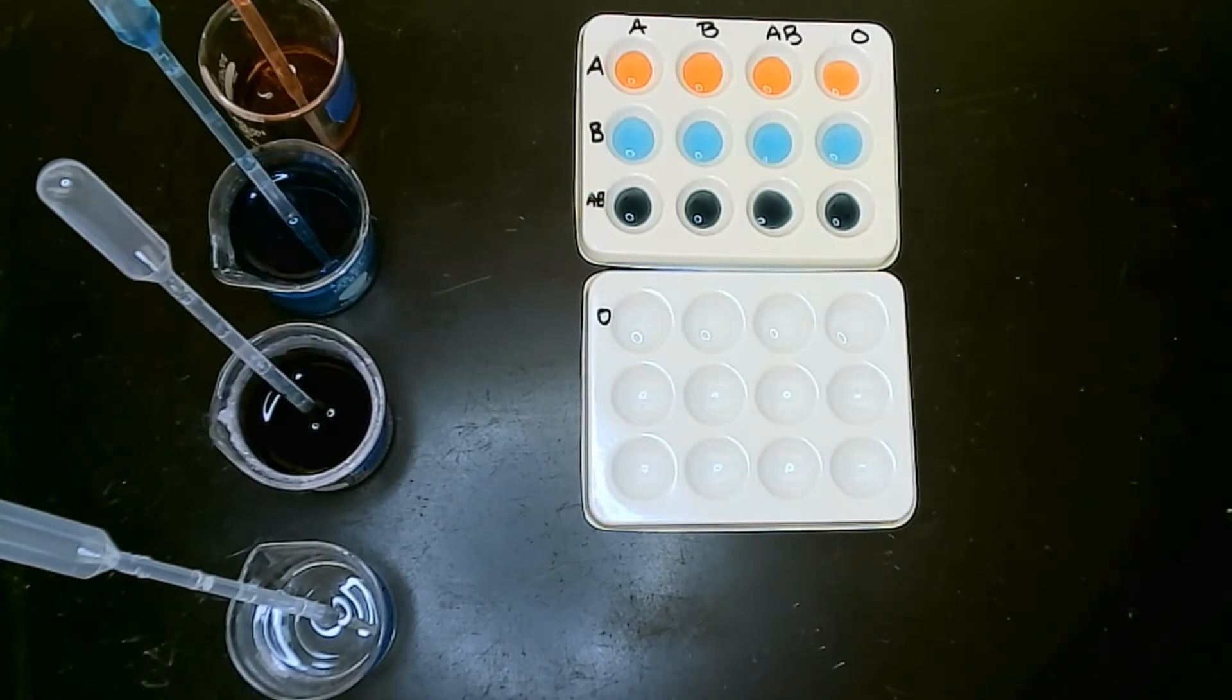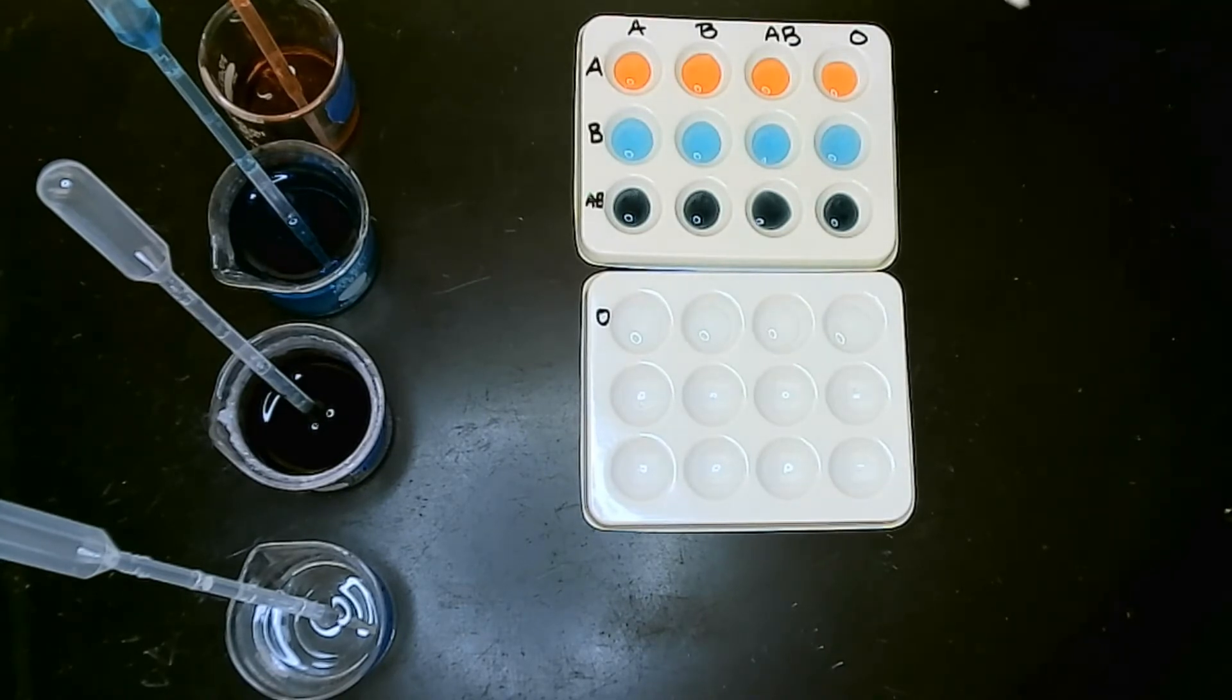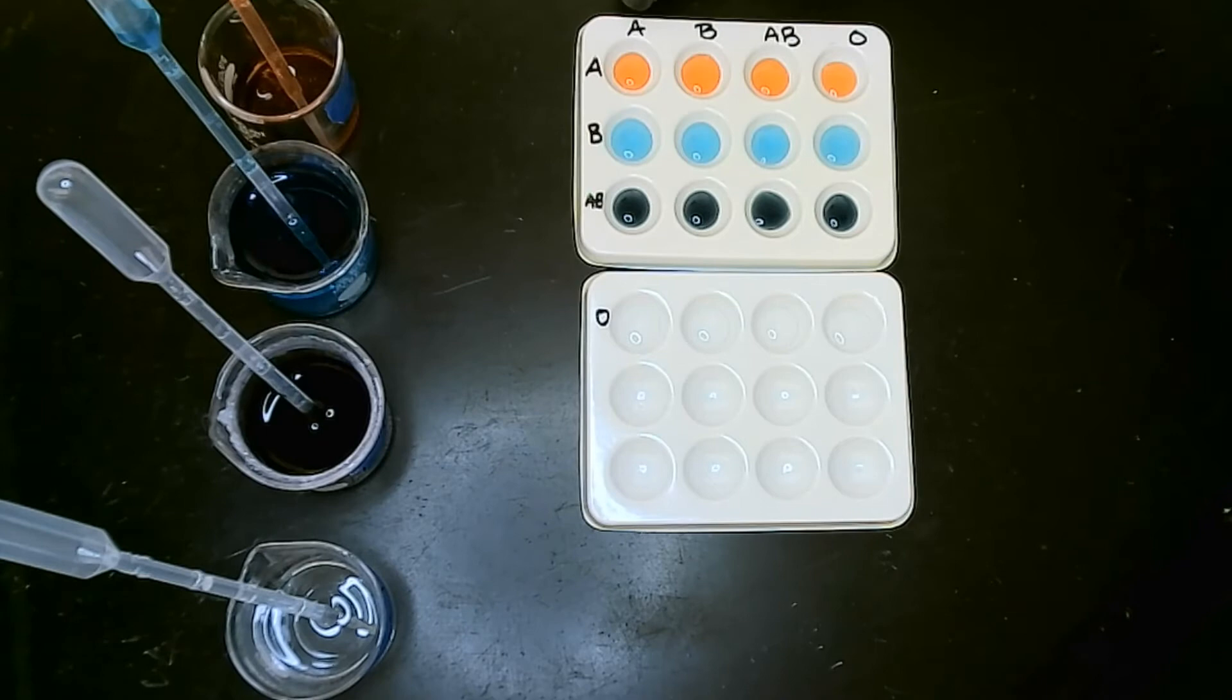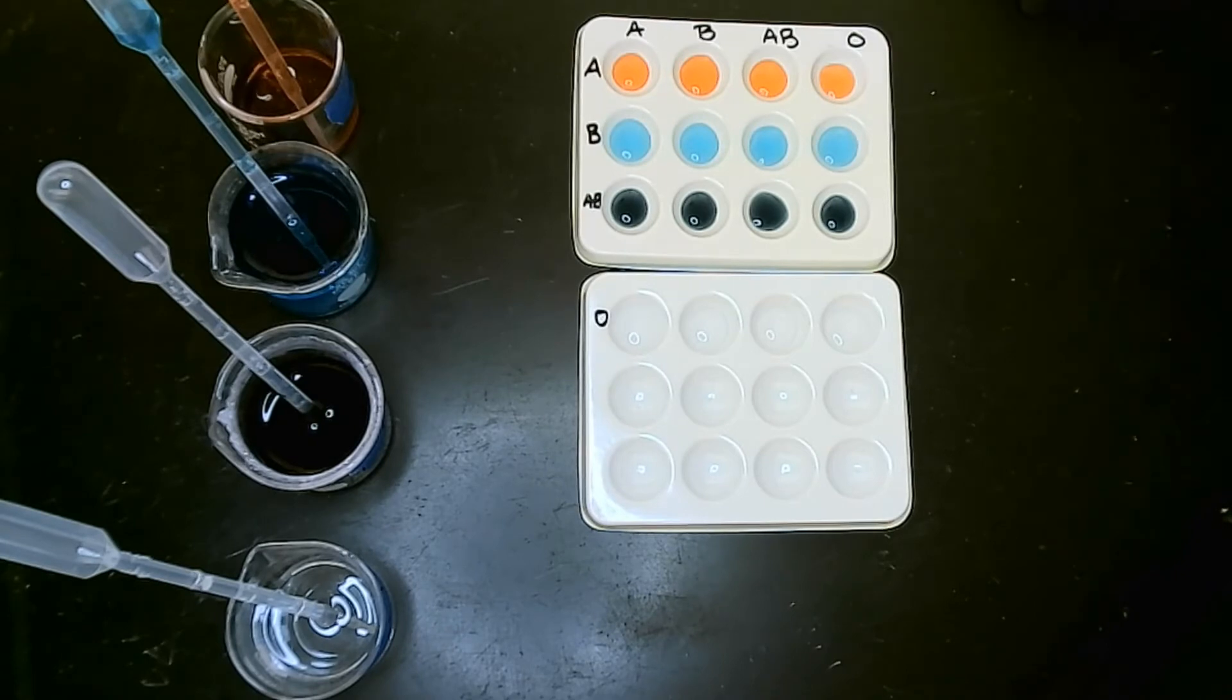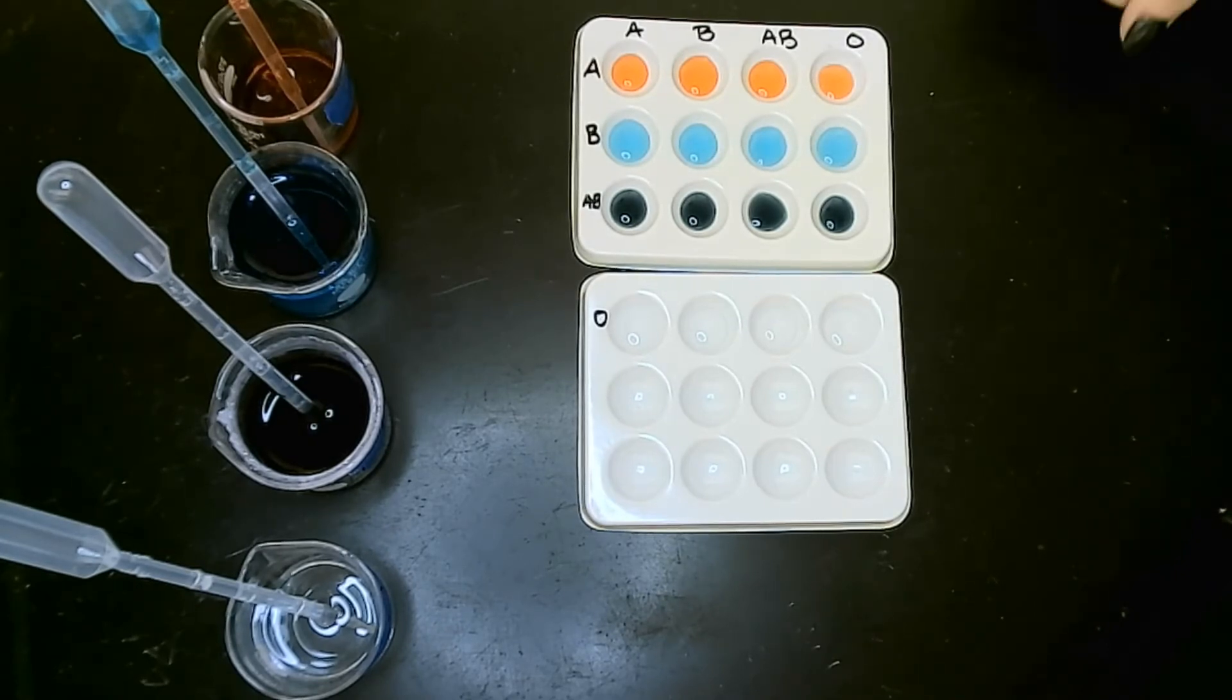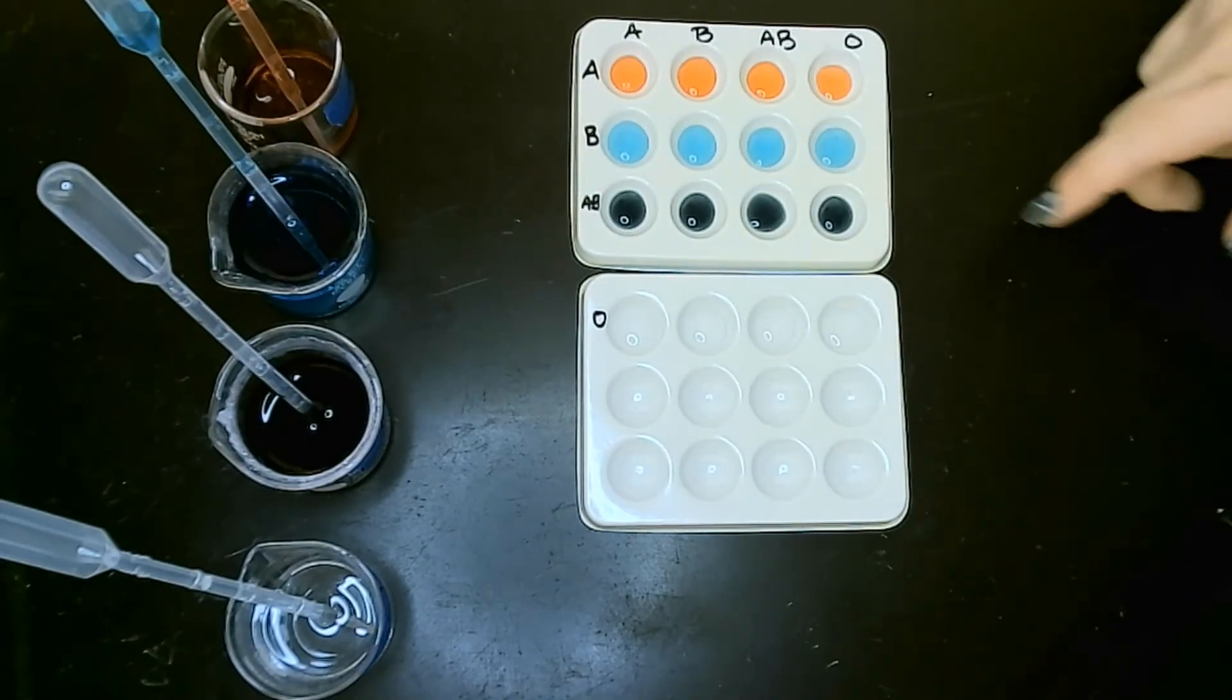So what I have here are labeled by different blood types using food coloring. The color red is representing blood type A, which I have in my first row here, and then blood type B is represented by blue. AB is a mixture of the red and the blue so it's a purple, although on the screen it looks a little bit black.